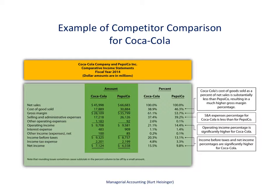Another way to use common-size analysis is to compare one company to another. Here we're looking at Coca-Cola and PepsiCo, looking at their income statements — the dollar amounts and the common-size percentages for each. It's not enough just to look at dollar amounts; it's nice to see which company has higher sales and profit, but it doesn't tell us much about their gross margin as a percent of sales or their net income as a percent of sales. We can run that comparison using the common-size format.